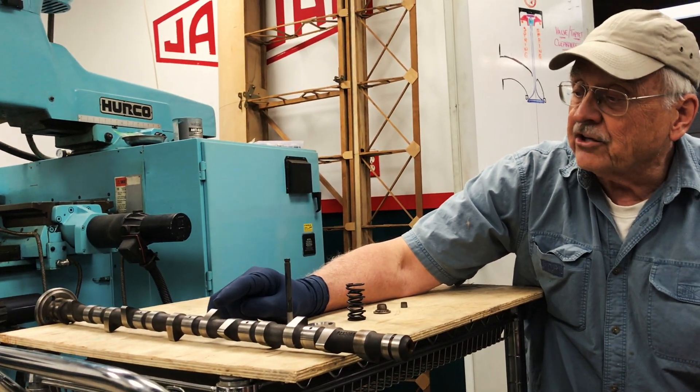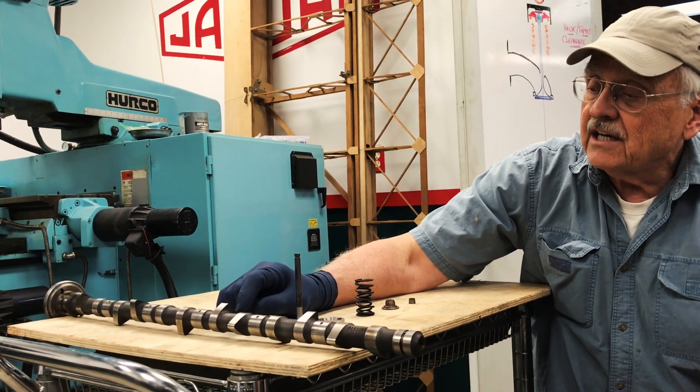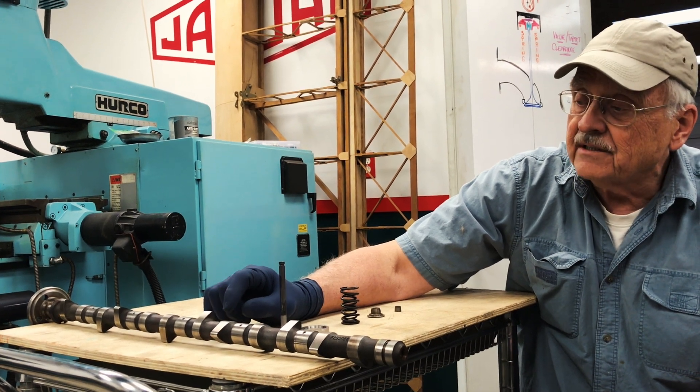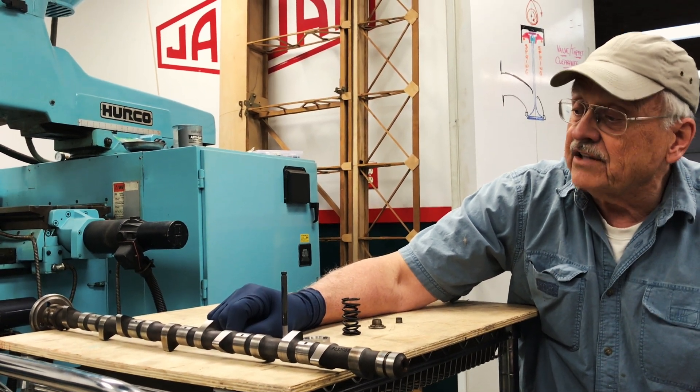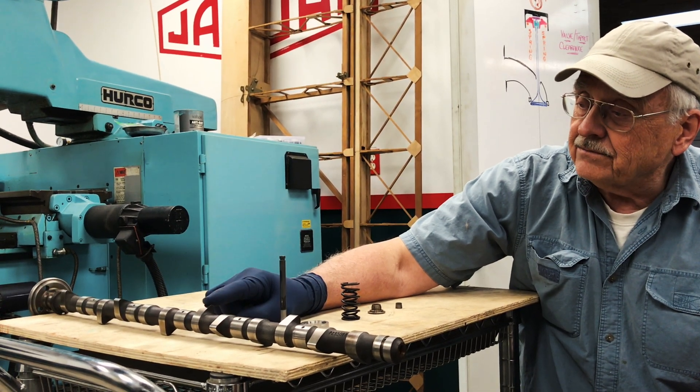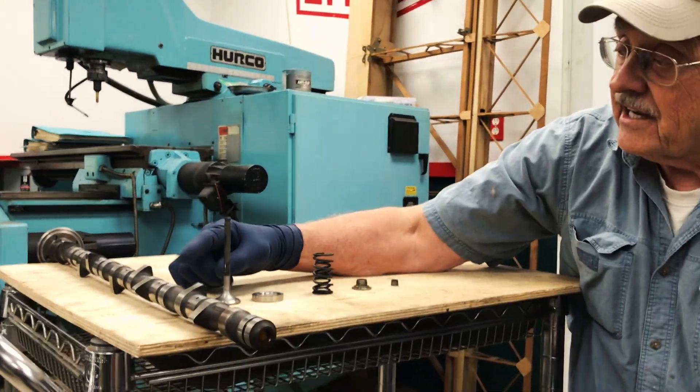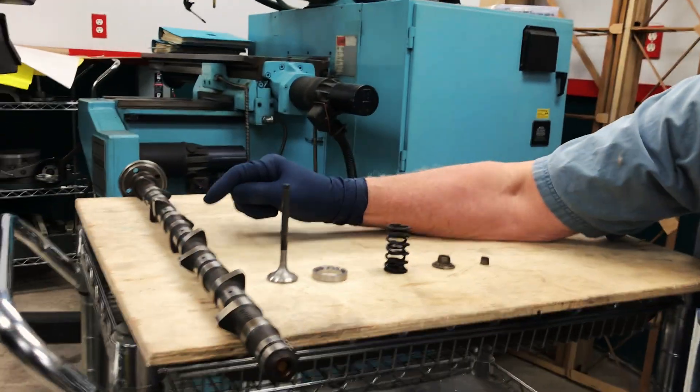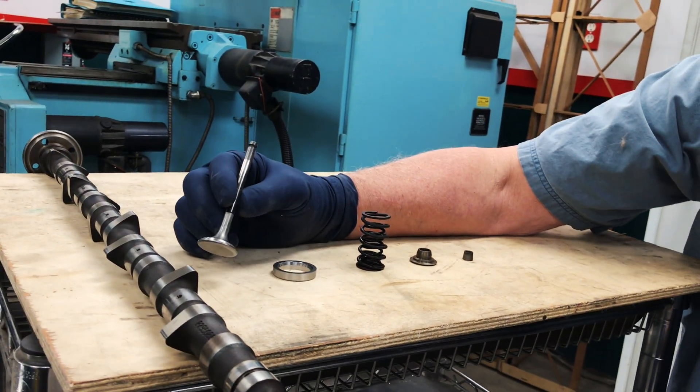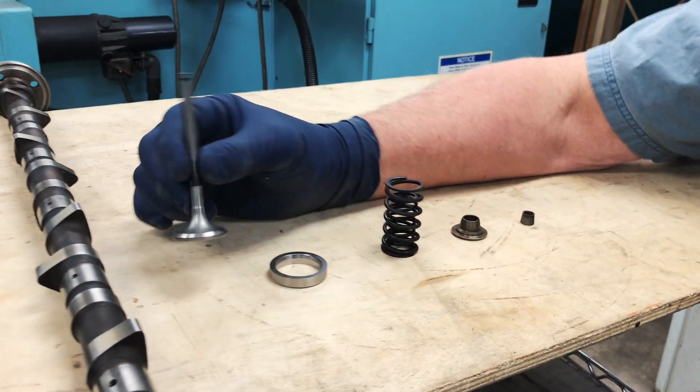The cam lobes not only cause the valves to open and close, but they also do it in a very controlled way to give the engine its breathing characteristics. The job of the cam is to open one of these, and you can see on the camshaft there's a number of these lobes, two of them dedicated to each cylinder.